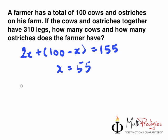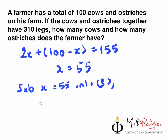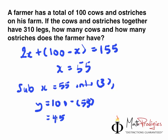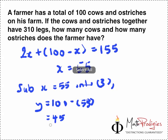All you have to do is substitute back that answer — x equals 55 — into equation number 3, which is y equals 100 minus x, which is now 55, and hence the answer would be 45. So y equals 45, x equals 55. There are therefore 55 cows and 45 ostriches. If you got it right, high five — you are a math prodigy. Good job.